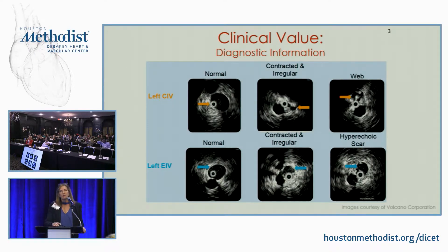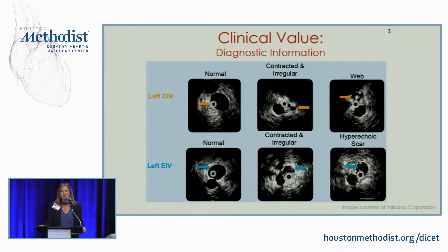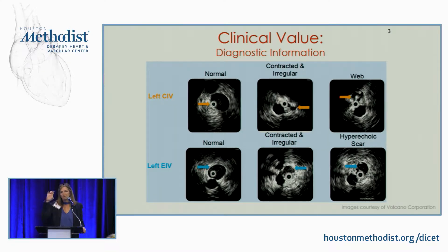A lot of people treat venous disease from the popliteal, but I now treat it from the superficial femoral vein. The technique is to find the lesser trochanter on X-ray, and you can also find the superficial femoral vein on ultrasound. It's below the inguinal crease — generally about eight centimeters distal to the common femoral vein. The superficial femoral artery will sit right on top of the vein, and when it shifts a little bit, that's where you can get your needle in.